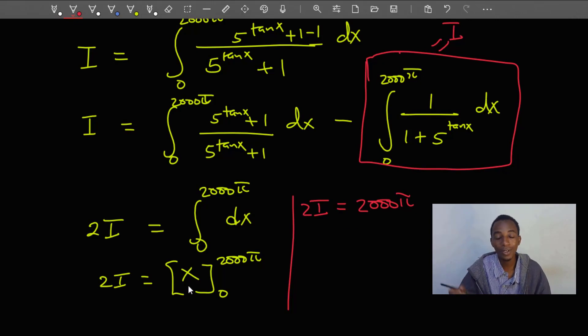I'll write the final answer in red. So finally we have I equals, if I substitute the upper limit that's going to be 2000π. If I substitute the lower limit that's just a zero, so the value of the integral here is going to be 1000π.